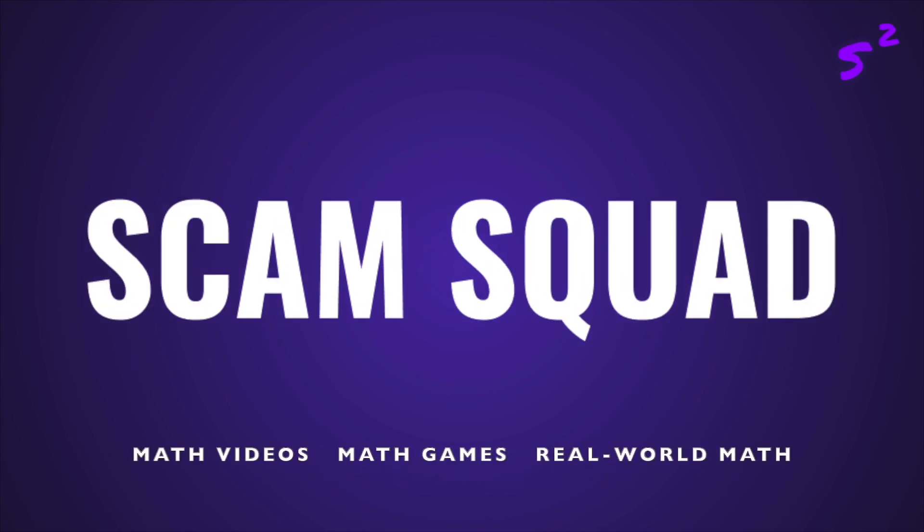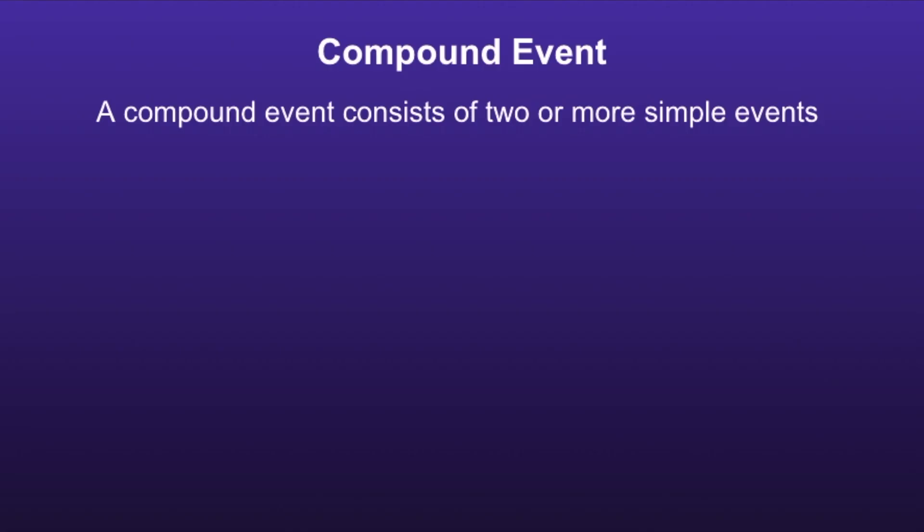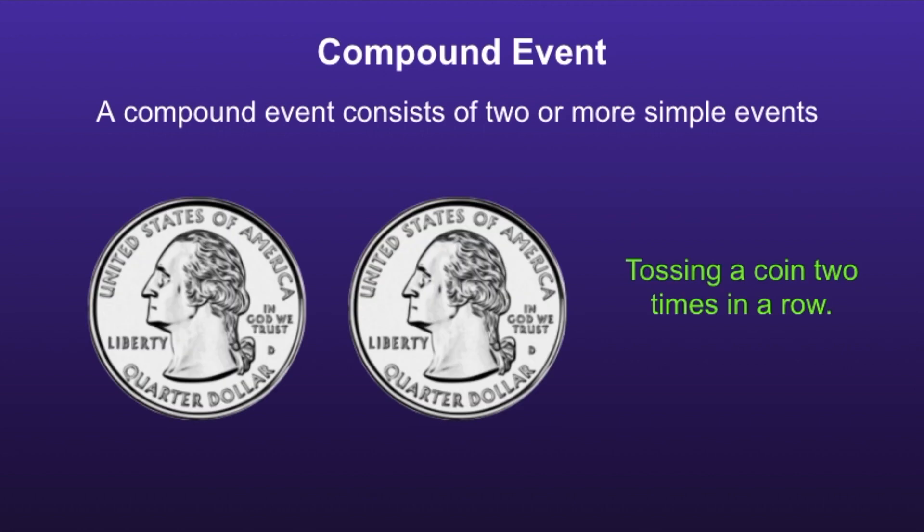A compound event consists of two or more simple events. For example, tossing a coin two times in a row.